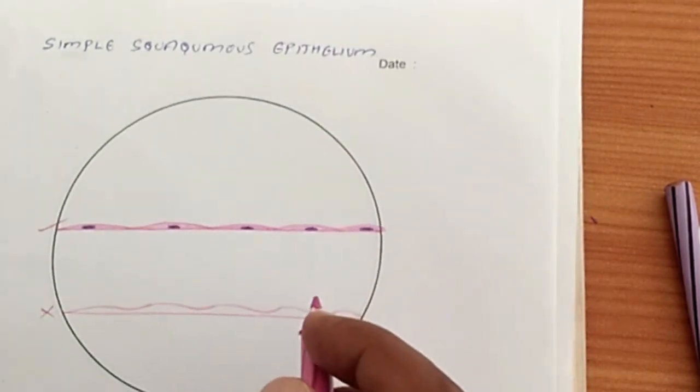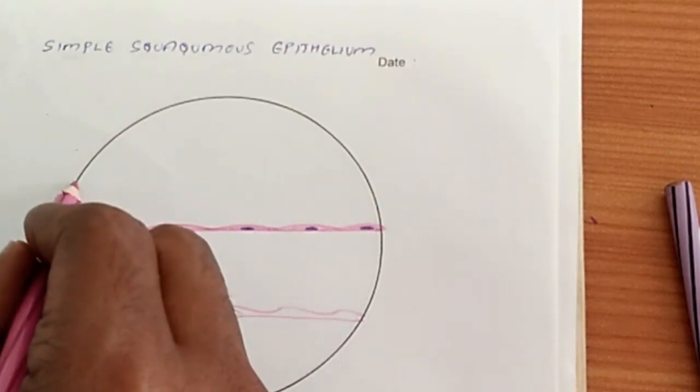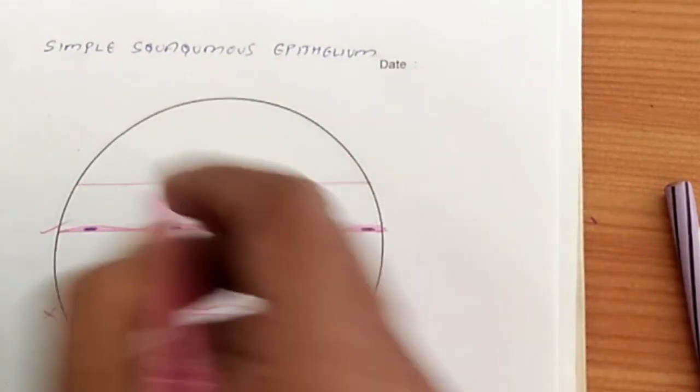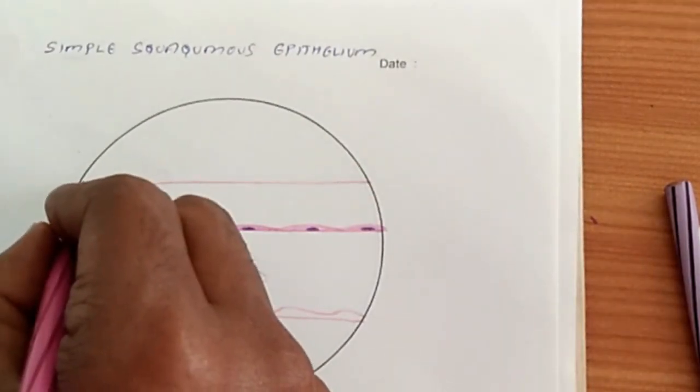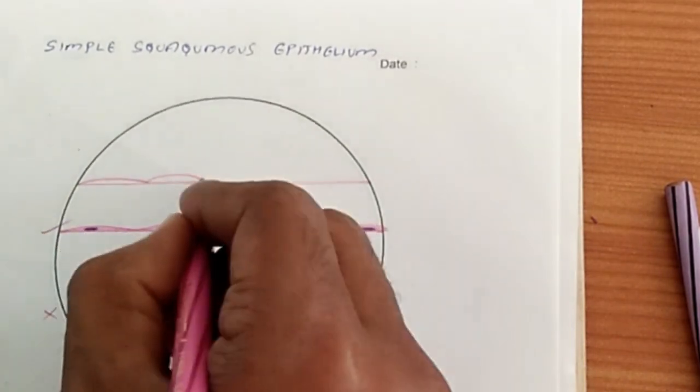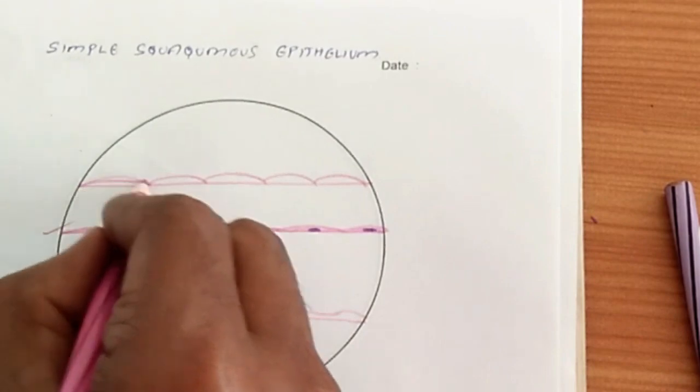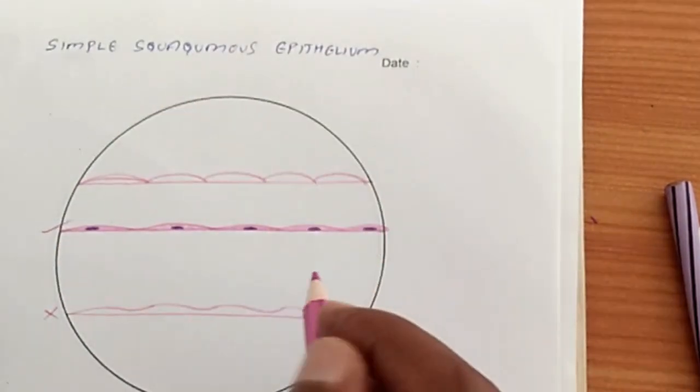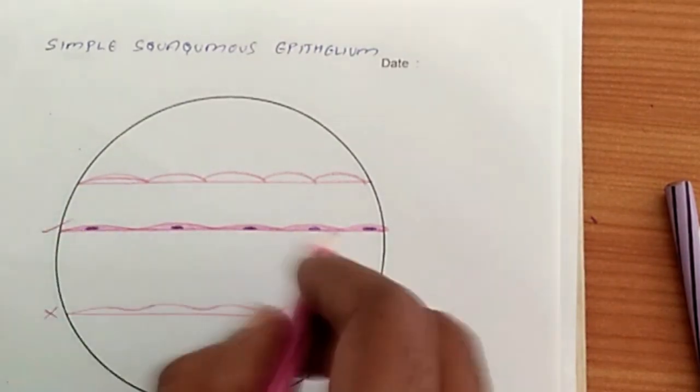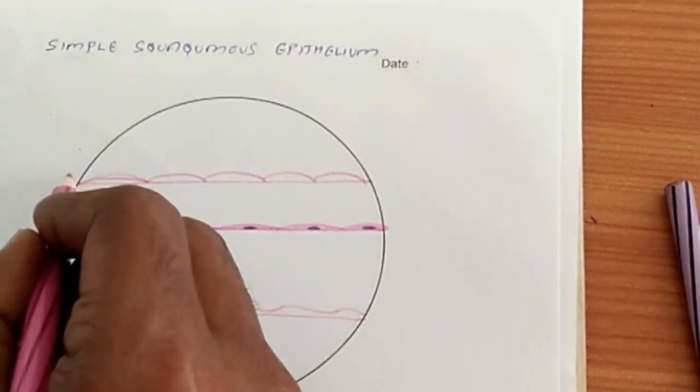Now another mistake. When we draw the squamous epithelium, the basement membrane, and you draw the cell like this. So this is also a wrong method. Because here the cells are flat, so they should be flat here, as seen here. So this is also wrong.